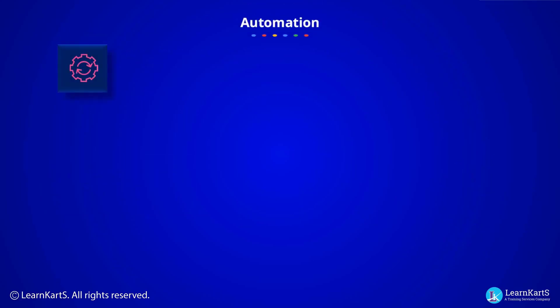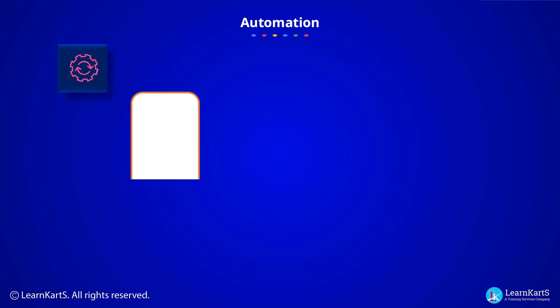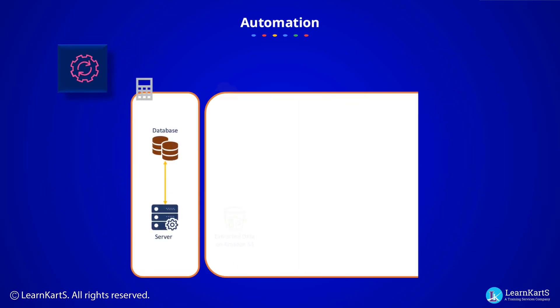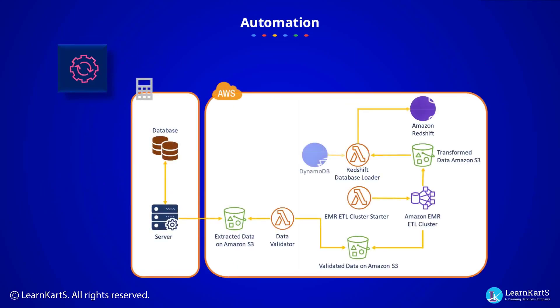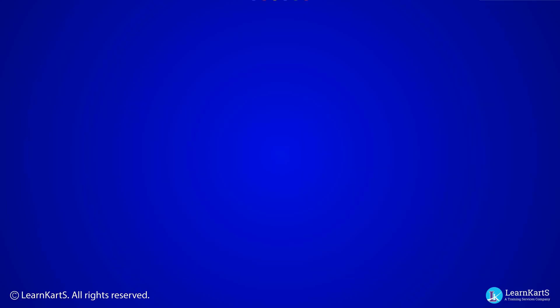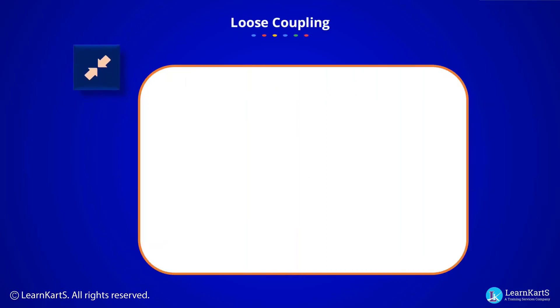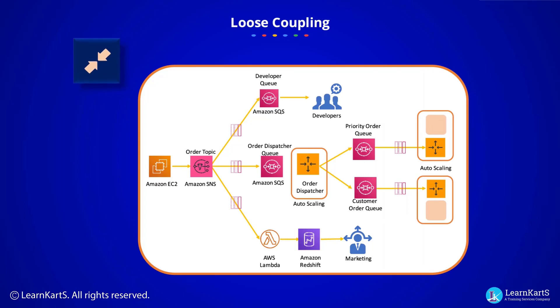Automation: unlike traditional IT infrastructure, cloud enables automation of a number of events, improving both your system's stability and the efficiency of your organization.